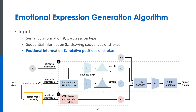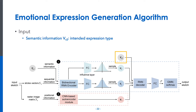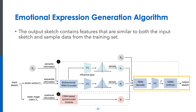The positional information is labeled by a raster-image matrix showing the relative positions of strokes. To control the expression type of the output, the framework uses another one-hot conditional vector indicating the expression type to be generated. After the encoding process, the four vectors capturing the features of the input sketch and the last stroke point are fed into the decoder at each decoding step. The output of the decoder is fed into a fully connected layer and further transformed into the parameters of a Gaussian mixture model to predict the next stroke point. The GMM is trained using our FaceX dataset; therefore, the output sketch contains features similar to both the input sketch and sample data from the training set.